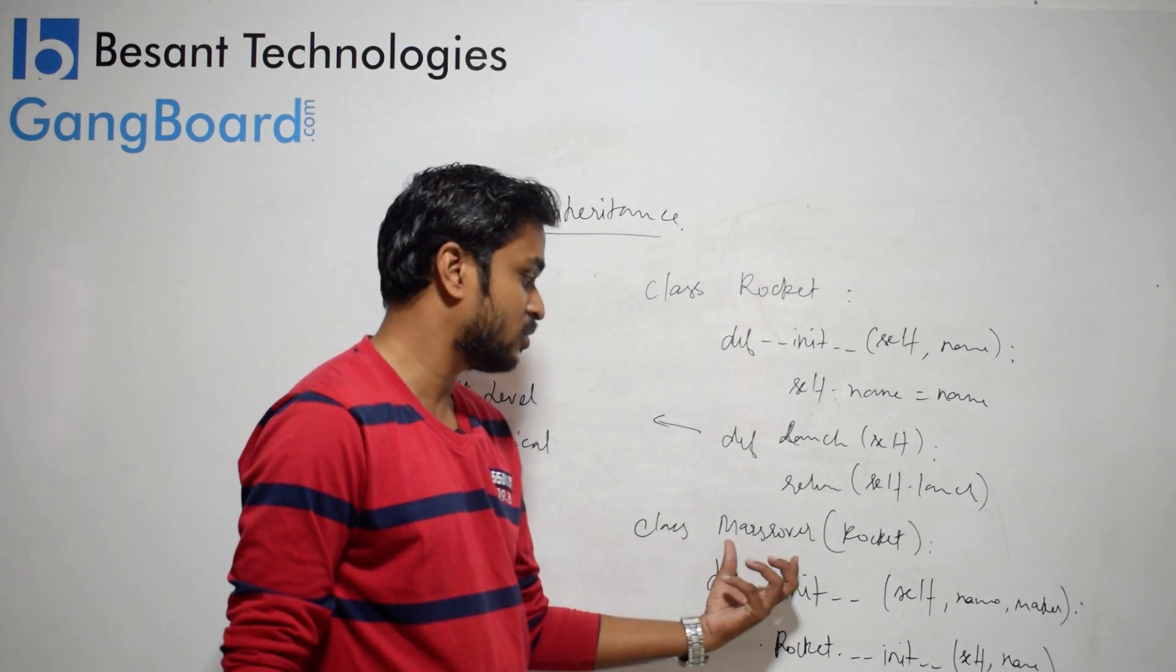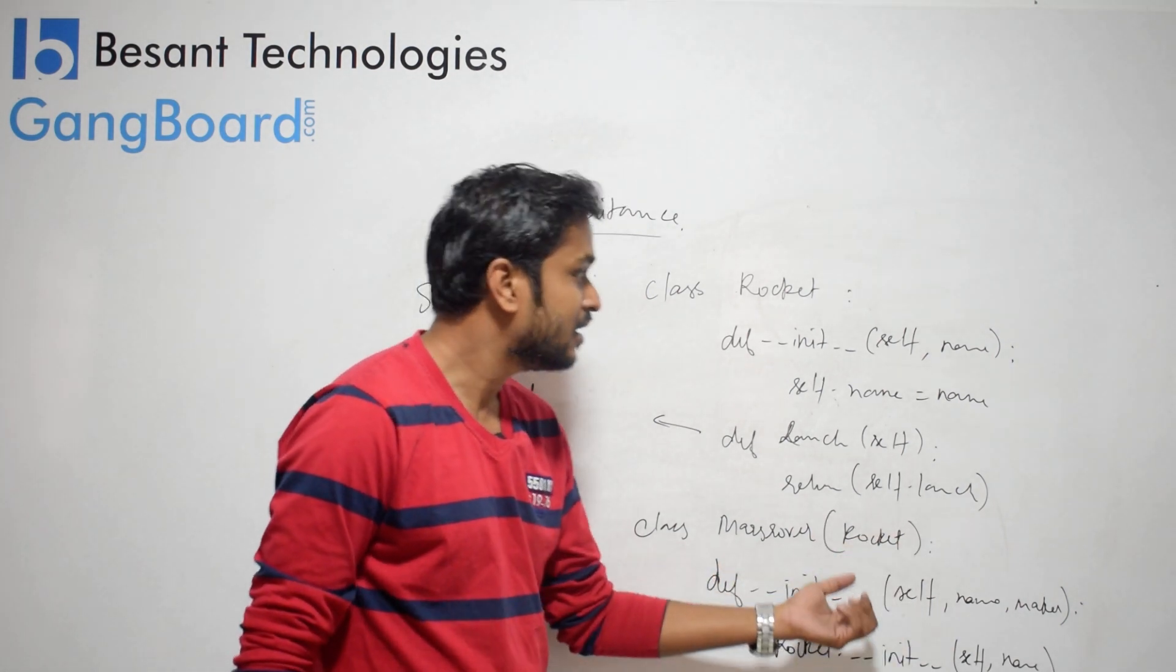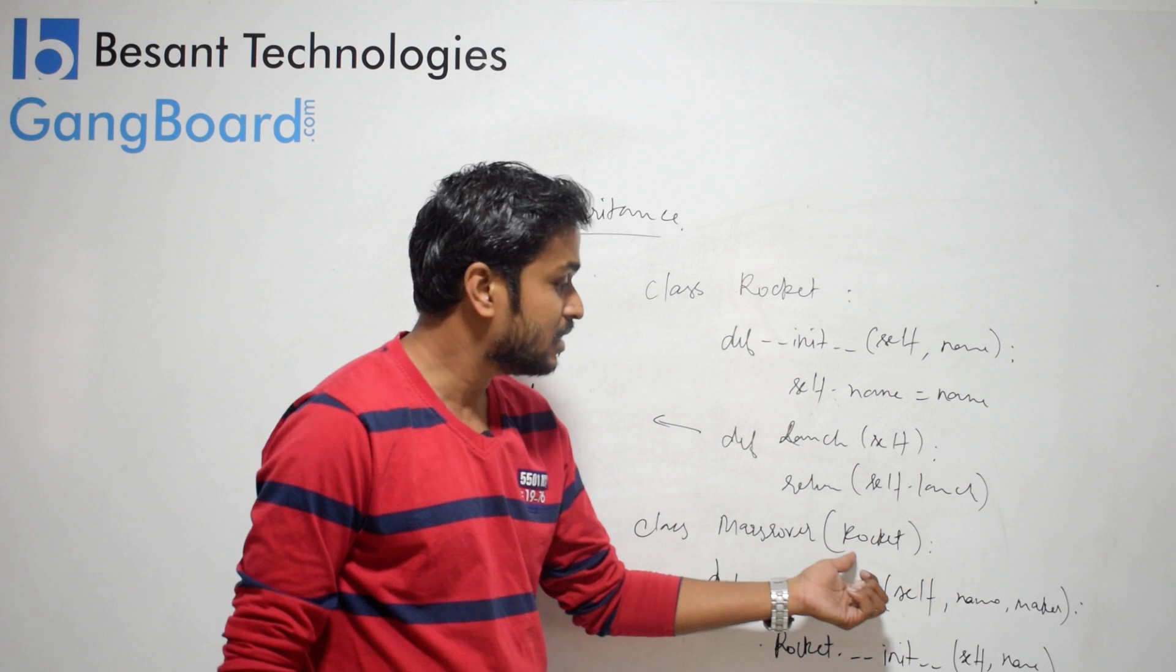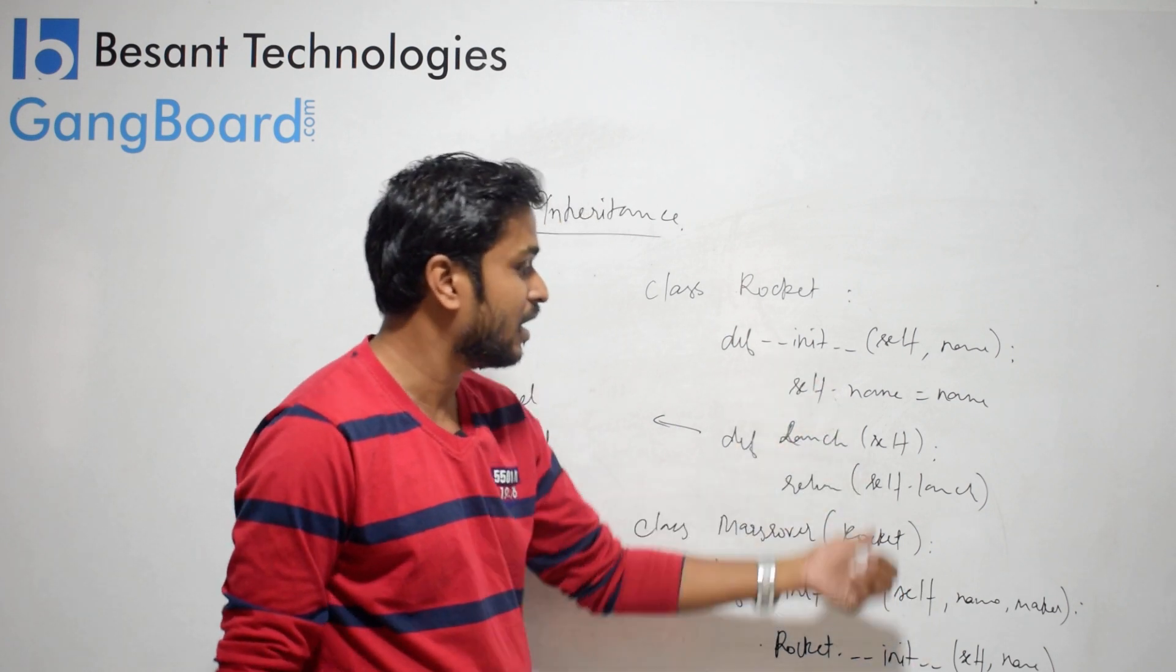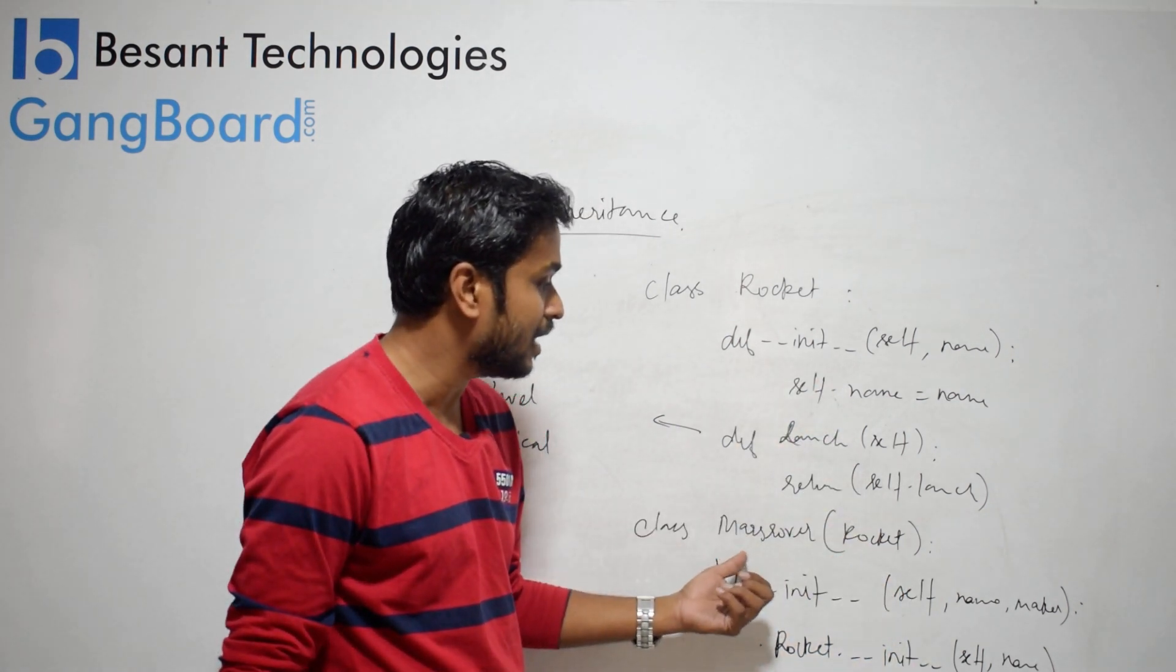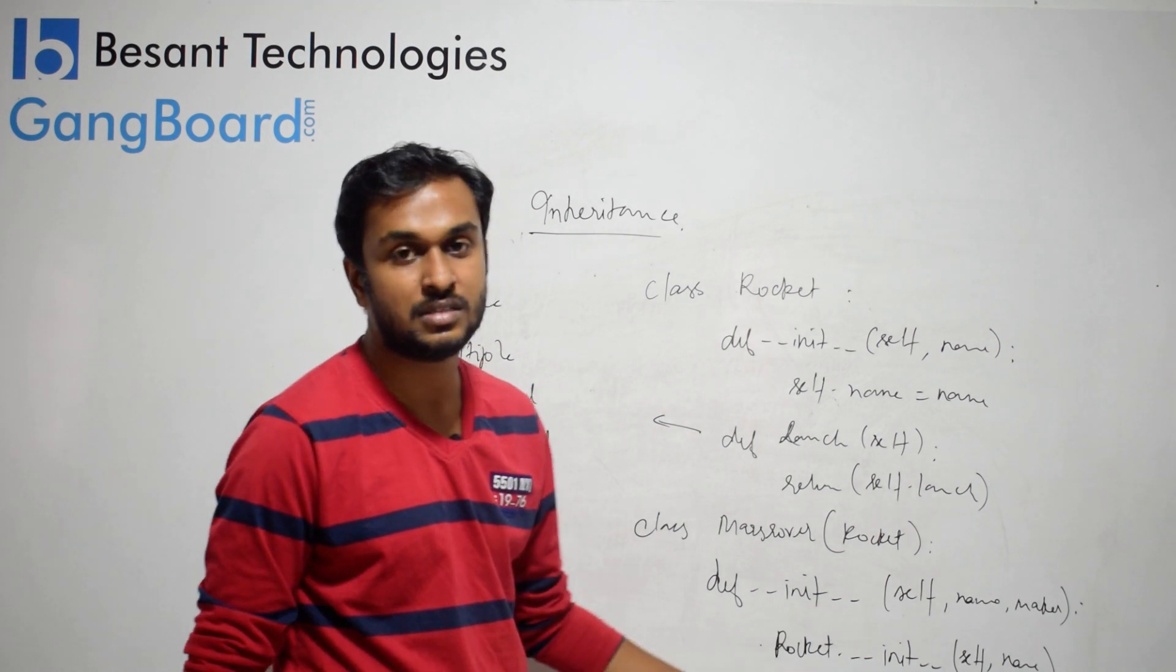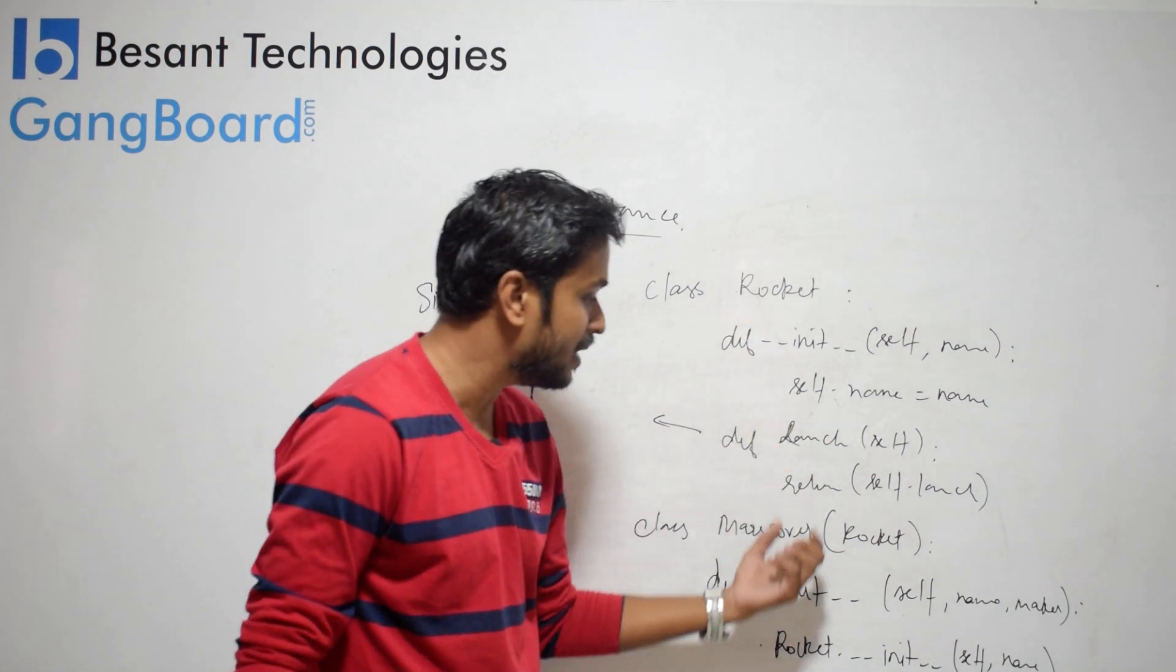I will create a class MarsRover. In the bracket, I give rocket. If I give a class name in the bracket, automatically the rocket becomes the base class for inheritance.